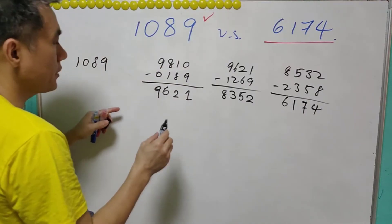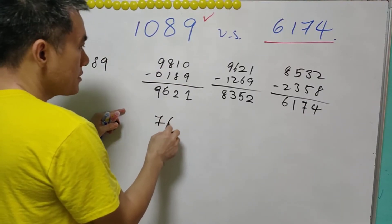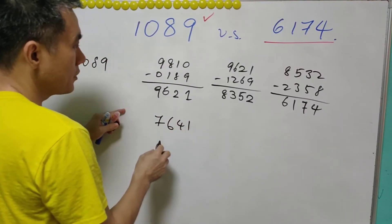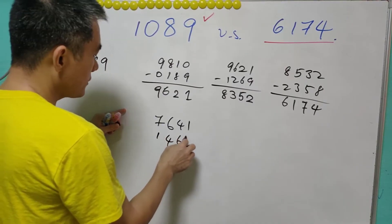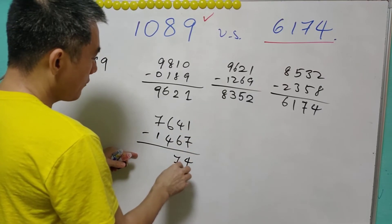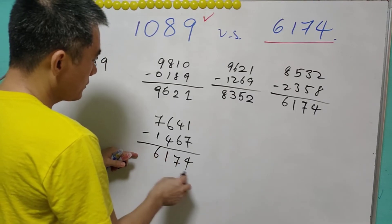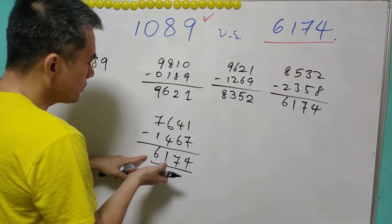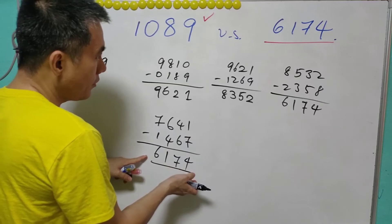Then we take the largest: 7641, and the smallest: 1467. We take the difference and reach 6174. Then you go back to this number.